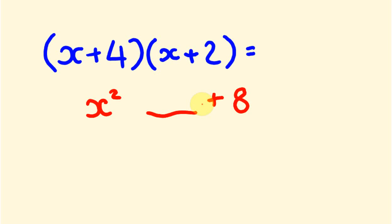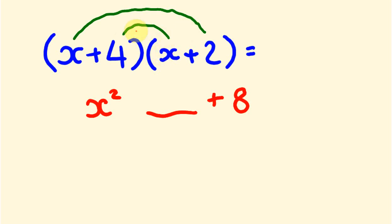Then what we're going to do is this thing called rainbow multiplication. So we're going to be multiplying these two numbers together and these two numbers together, and by adding these together we're going to get the middle part of our answer. So first: x times 2 is 2x. We're going to add that to 4 times x, which is 4x. So putting those together we get 6x, because 2x plus 4x gives us 6x. So there's our answer.